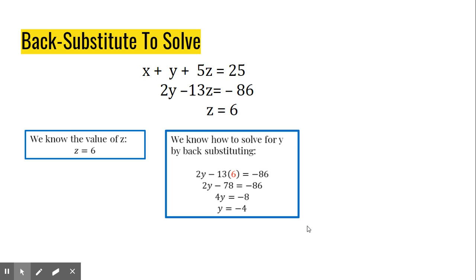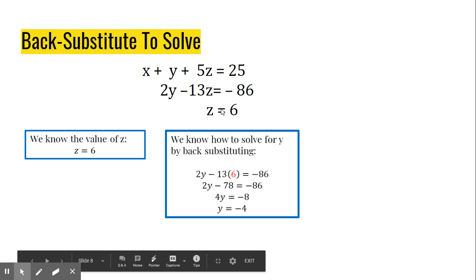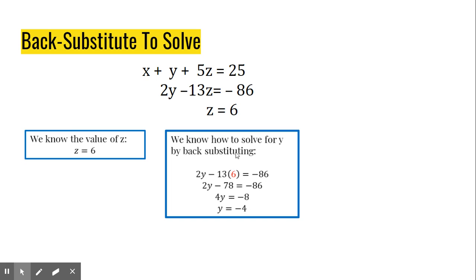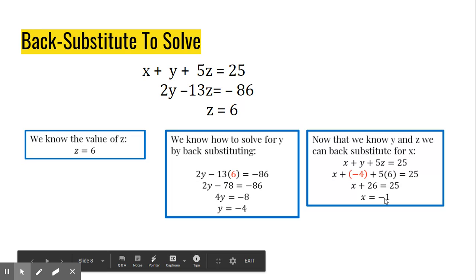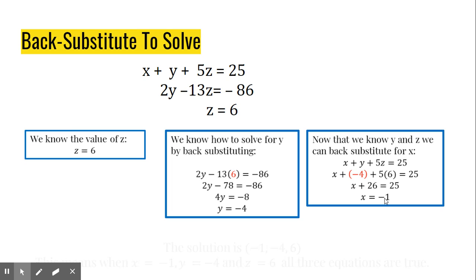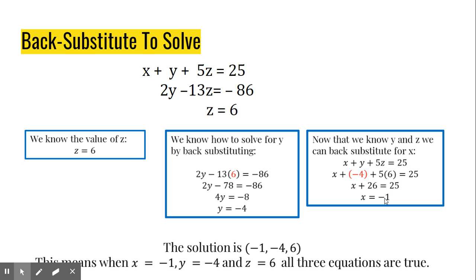We know the value for z is 6. So I'm going to back substitute into the second equation. 2y minus 13z is equal to negative 86 to solve for y. And here is that work here. Now that I know z and y, of course, I can go ahead and solve for x. So I'm going to go to the original first equation and substitute in negative 4 for y and 6 for z. I get x plus 26 is equal to 25. I subtract 26 from both sides. And I end up with x is equal to negative 1.